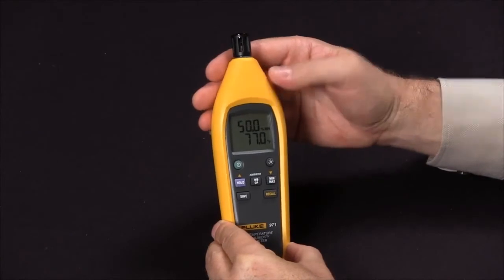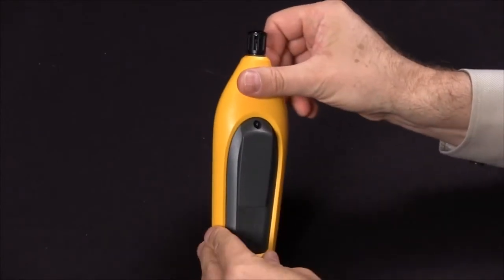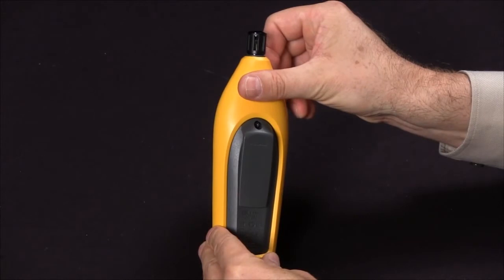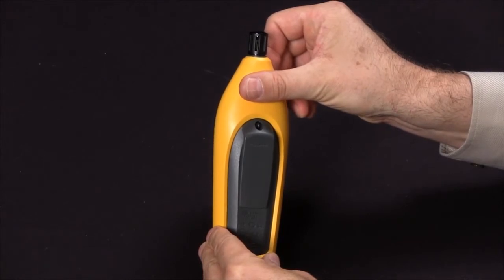You can change to degrees Celsius, simply remove the battery access panel and you will find a selector switch to change to either degrees Celsius or to degrees Fahrenheit.